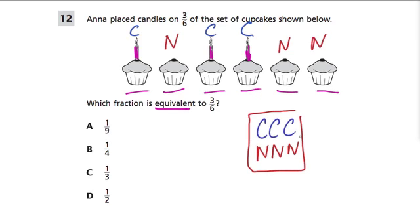Since there are exactly half of them that have candles and half that don't, three sixths is equal to one half. So here we have our choice D, which is exactly what we want.